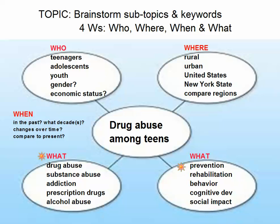As you can see, your answers to these four W's will vary widely. This brainstorming process is fully open-ended — there are no right or wrong answers. Part of the process is also to eliminate possibilities. For example, you might brainstorm prevention, rehabilitation, and behavior, then decide you really want to focus on how drug abuse affects behavior. You can cross out the others and focus in on that. So part of brainstorming is also to eliminate possibilities and help you narrow your topic. That's how to brainstorm.